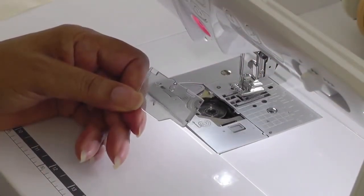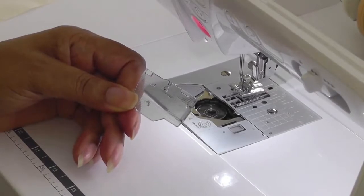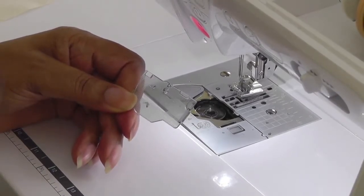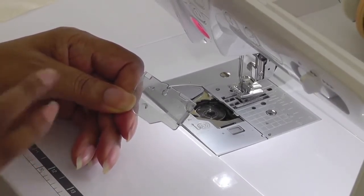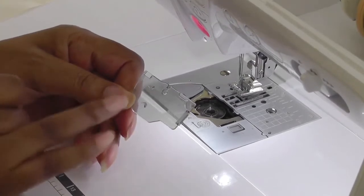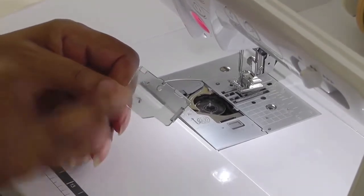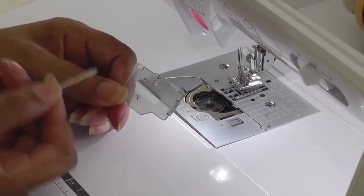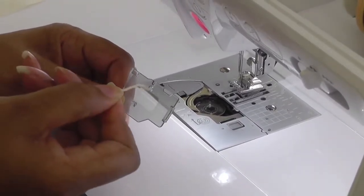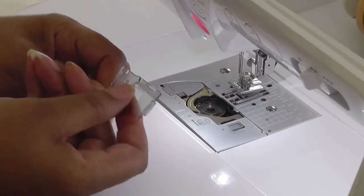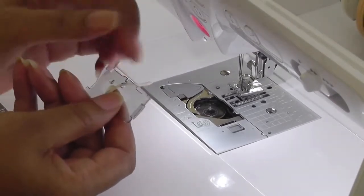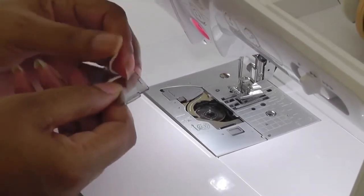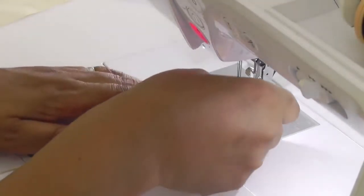The bobbin cover should come with your pin tuck foot and it enables you to hold the cording in place, but it is possible to do pin tucks without this, so if you don't have this don't be too bothered. You thread the cord into the front of the bobbin cover - there's a little tuck there to guide it through - and then place it into position. It's as simple as that.